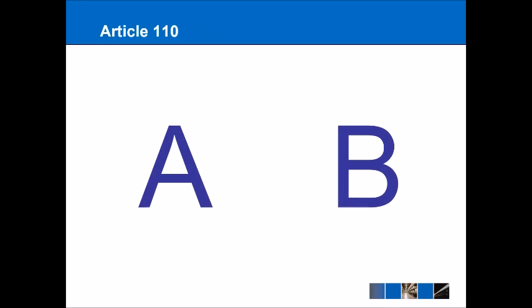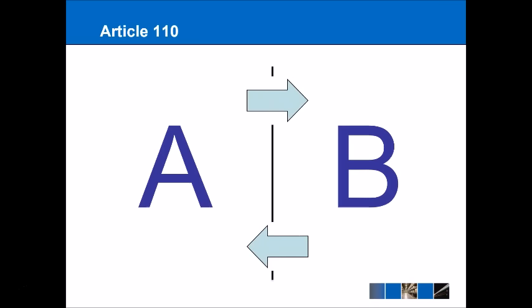Article 110 also seeks to close a loophole. Some countries try to get around Article 30 by imposing internal taxation — they won't impose a charge at the border, but rather wait until the goods are inside the country and then impose heavy taxation on them. This doesn't fall under Article 30 because Article 30 is only concerned with charges occurring at the border crossing. Article 110 addresses where countries try to get around this by imposing a tax once the goods are inside the country, and that won't be allowed either.